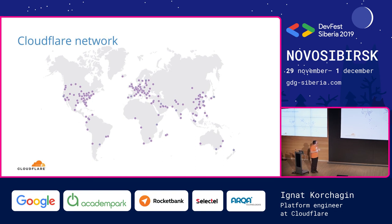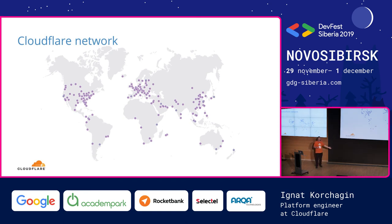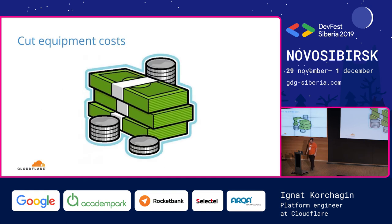This is the Cloudflare network today. We run around 200 data centers across the world. Imagine if we can be even a little bit more power efficient — we could probably save enough power to power a small African city. And with power efficiency, you can also cut costs, because you pay for power, and if you use less, you pay less.